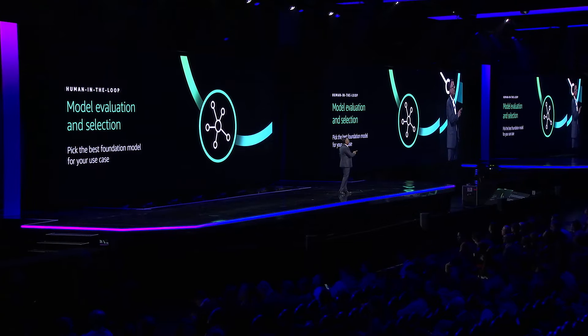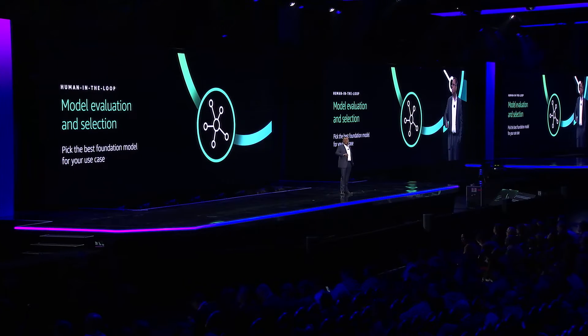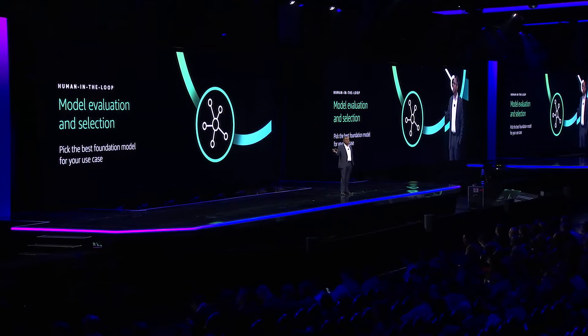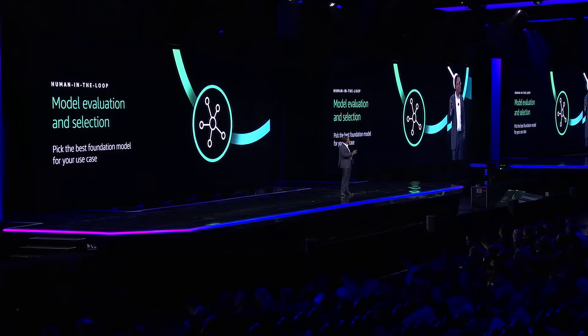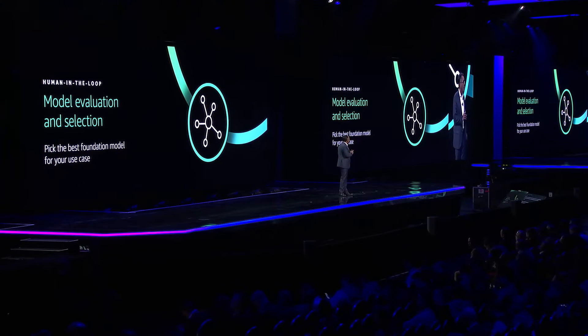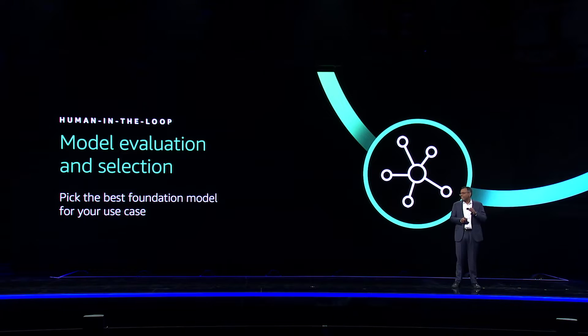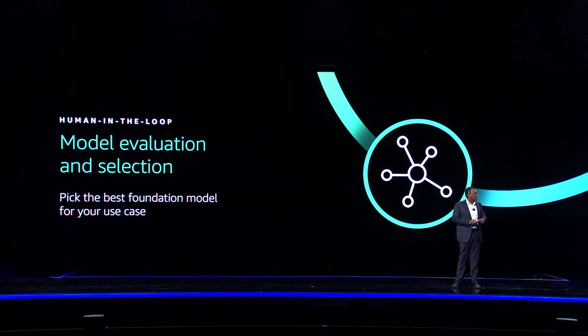One of the most common ways you can integrate human feedback into your Gen AI strategy is the model evaluation and selection process. When you pick the best model for your use case, you can optimize accuracy and performance while better aligning to your brand style and voice. However, model evaluation requires a deep level of expertise and data science, and it can be a tedious, time-consuming process.